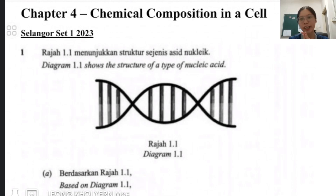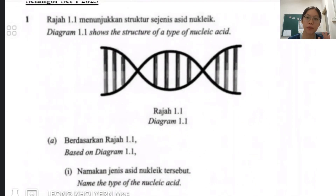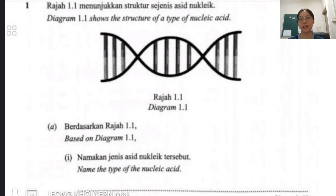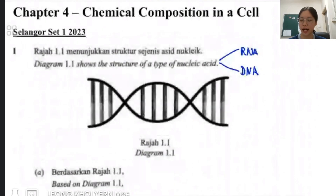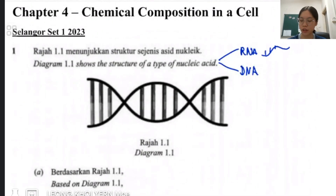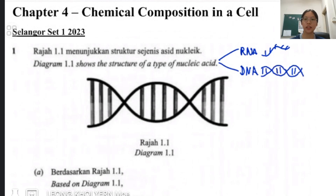Let's take a look at this question from Selangor SAP 2023. It shows a structure of a type of nucleic acid based on Diagram 1.1 — state the type of nucleic acid. It's obviously DNA because nucleic acid has two types: RNA and DNA. RNA is single-stranded, but this one is clearly a double-stranded, double helix structure. So it is a DNA.